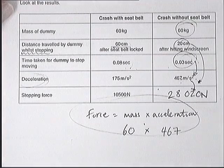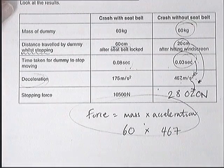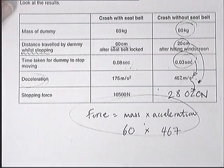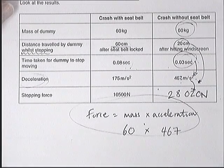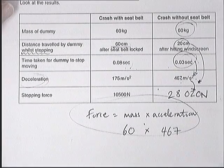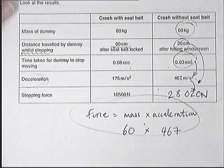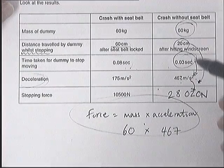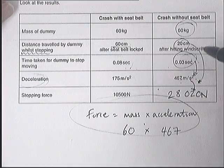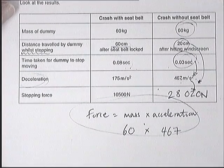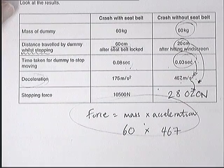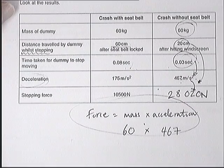That energy is dissipated over a larger distance — it's the same idea as a crash helmet or a crumple zone. The whole crash, all the kinetic energy, is being dissipated over a longer time or a larger distance. Therefore, you're getting a lower force and less chance of injury.